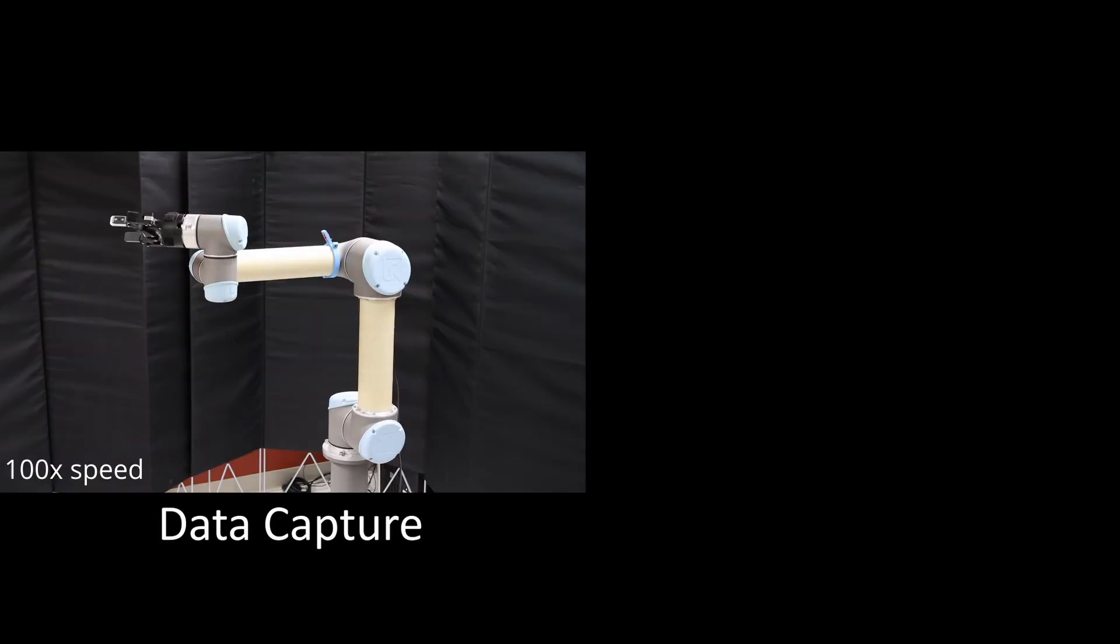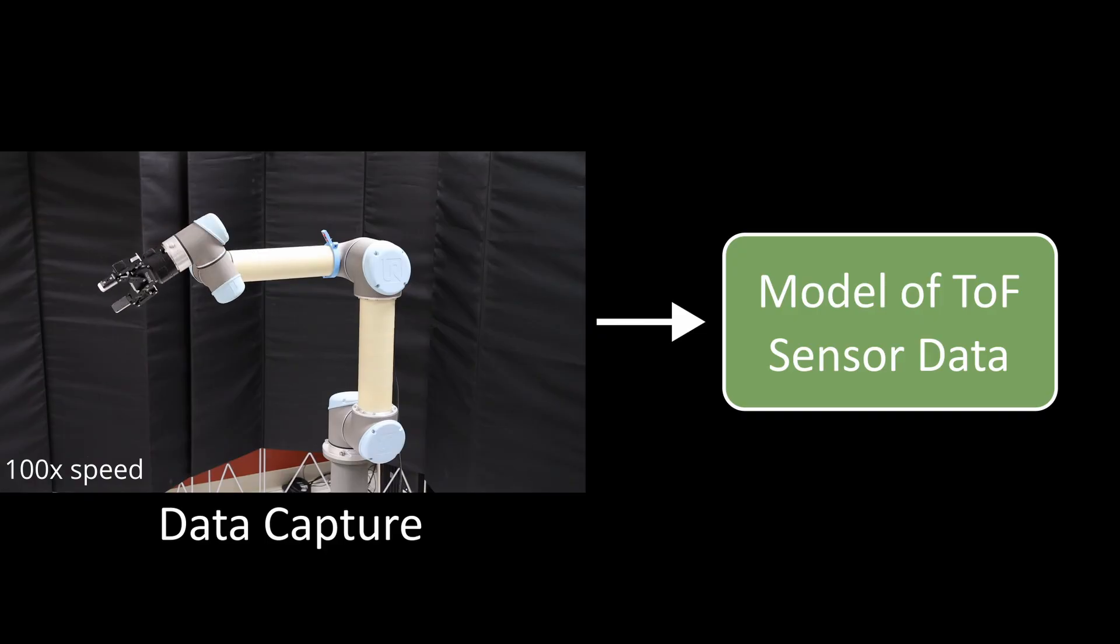We capture measurements from the sensor, which we use to build a model of how the robot would appear to the sensor for any given joint state, if no other objects were present.